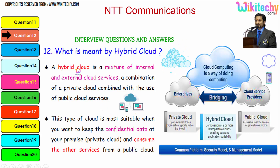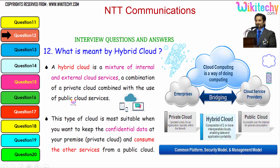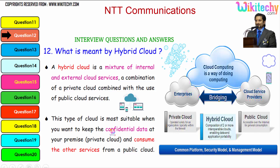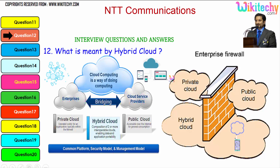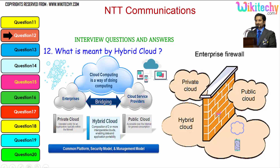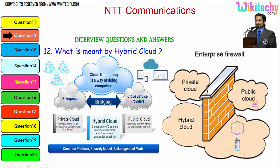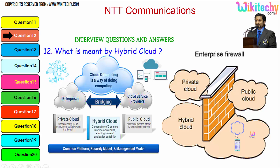By definition, a hybrid cloud is a mixture of internal and external cloud services — a combination of a private cloud combined with the use of public cloud services. This type of cloud is most suitable when you want to keep the confidential data at your premise and consume other services from a public cloud. Private cloud is really secure — you will have a specific firewall. Over public cloud, you don't have many specific firewalls to control intruders. In a hybrid cloud, it is partial — you have partial secure data inside the firewall and the rest of the data outside the firewall.